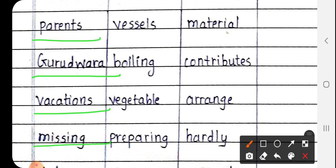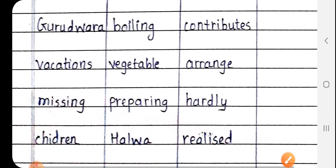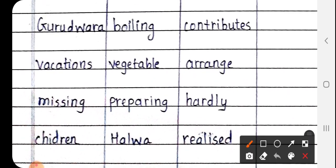Next missing, missing means laapata. Next children, C-H-I-L-D-R-E-N. Students, there's an L missing in the spelling, so you have to write C-H-I-L-D-R-E-N. Children means baal bachche, the small children.